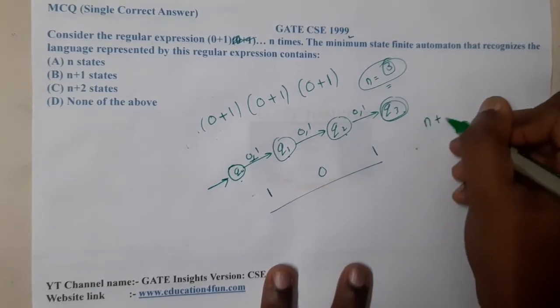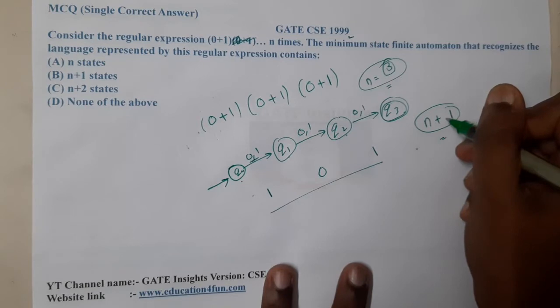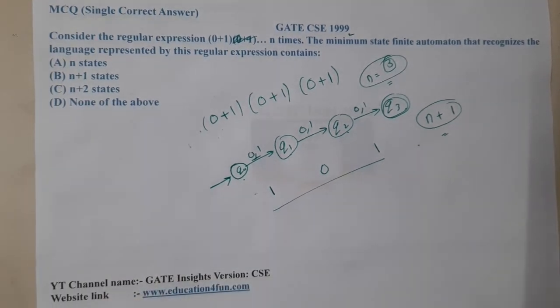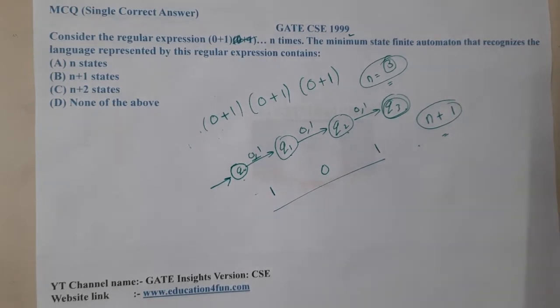I need n+1 states, but in the question the minimum states are required for the finite automata that recognizes the language. Yes, I think this should be the most appropriate answer.